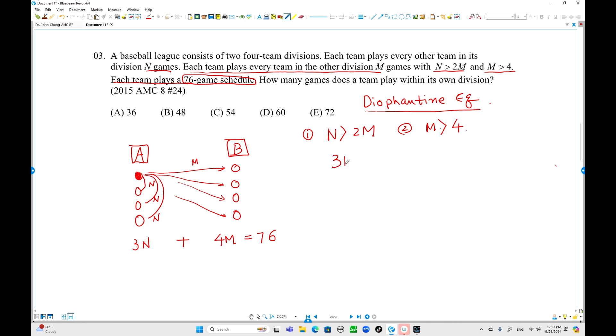To solve this, 3N plus 4M equals 76. I'll rearrange this: 4M equals 76 minus 3N. So M equals (76 minus 3N) over 4. That's the relation between number of games M and N.